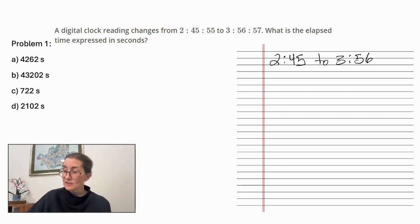That is a difference of 1 hour and 11 minutes. Now the difference from 55 seconds to 57 seconds is 2 seconds.